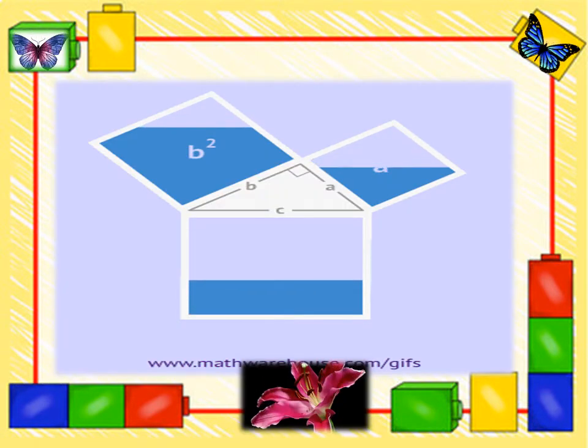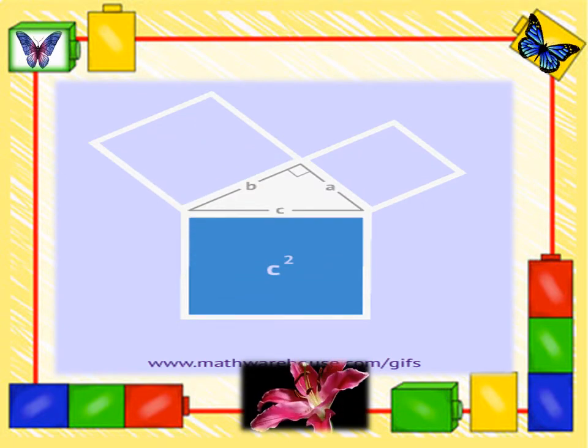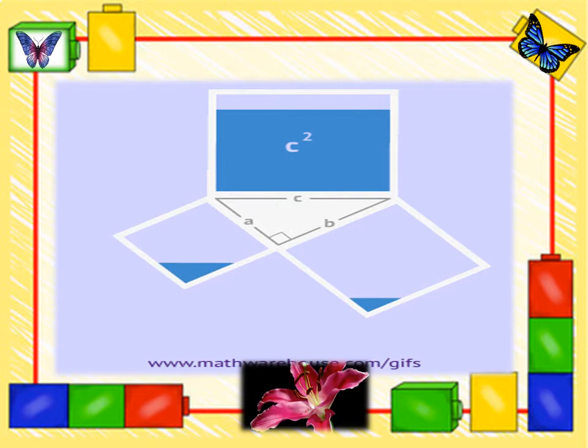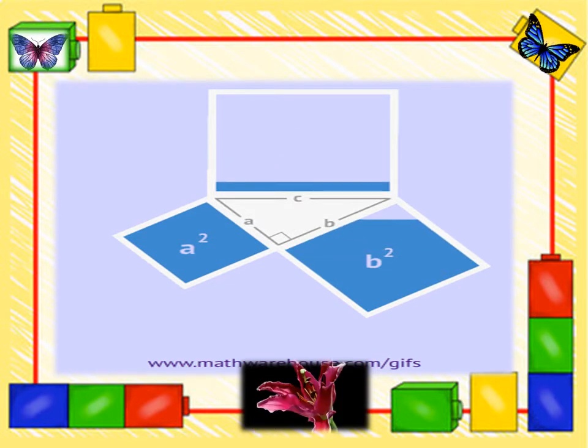If you look at the picture, c² = a² + b². Whatever happens, they should be equal. If not, they are not called right-angled triangle.